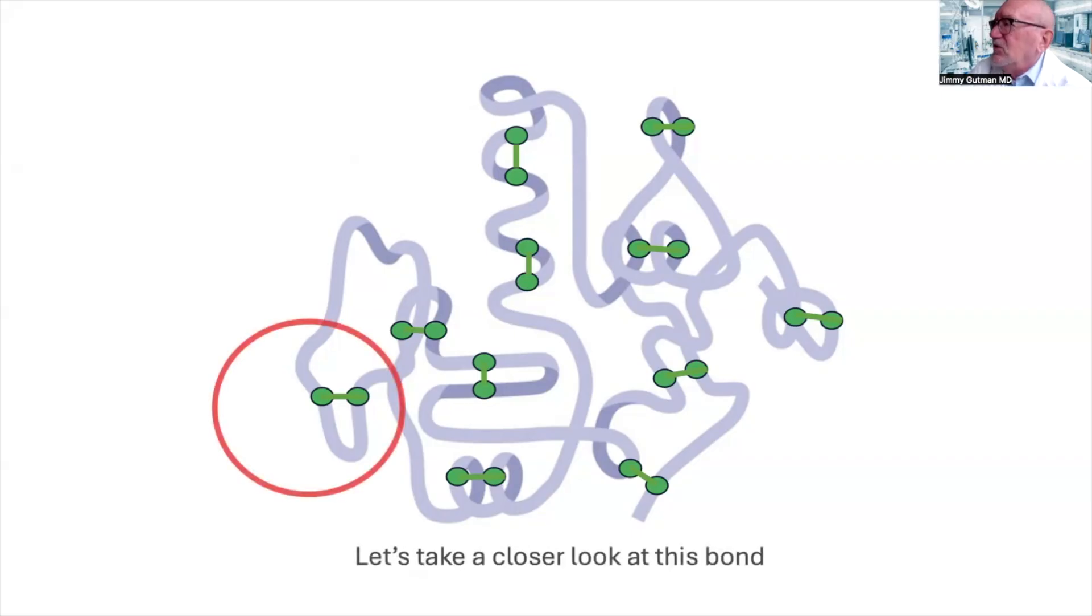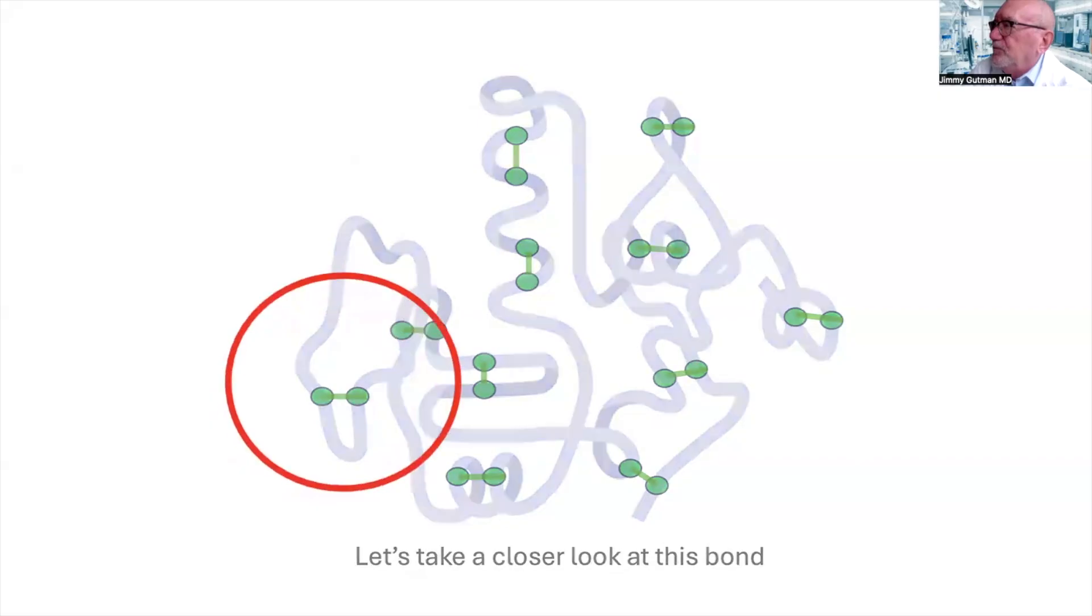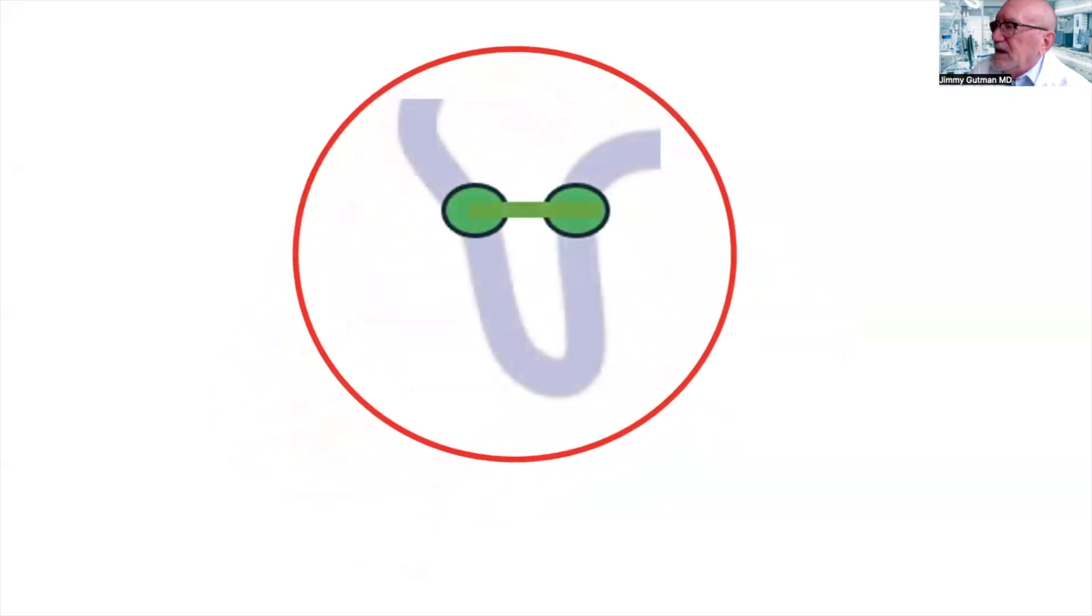Now let's zoom in closer to this one bond pictured in the red circle. Here we go. A nice tight close-up. So again, the green dots are two cysteine molecules. And between them, we see the bond. This is called a disulfide bridge or a disulfide bond.